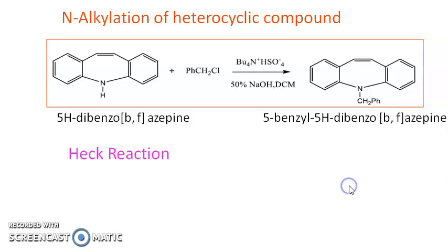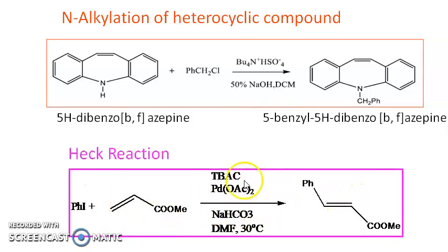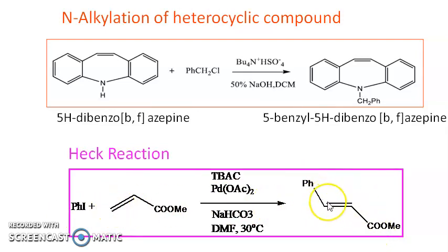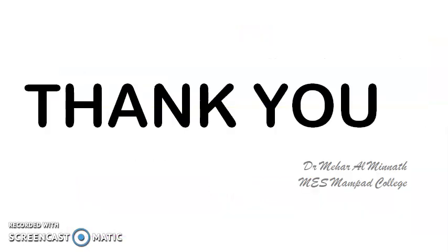The Heck reaction can also be carried out using PTC. TBAC — tetrabutylammonium chloride — is used, along with a palladium catalyst. You can carry out the coupling reaction and get the product very easily, without needing toxic solvents like DMF or THF. These are a few examples. There are many more available in the literature — please explore those. Thank you for watching this video.